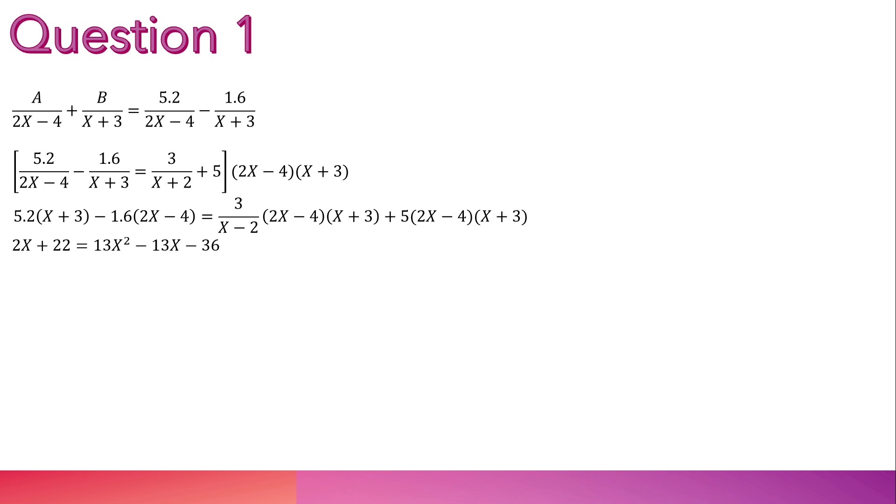2x plus 22 equals 13x squared minus 13x minus 36. And if we push the 2x plus 2 to the right hand side, we will get this. And make a quadratic formula from which we can solve. We reject the negative as a fraction cannot have a negative number on its bottom. So we accept the positive. That's the end for question 1.